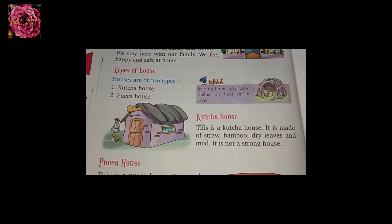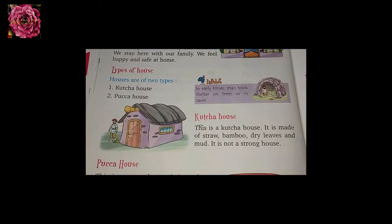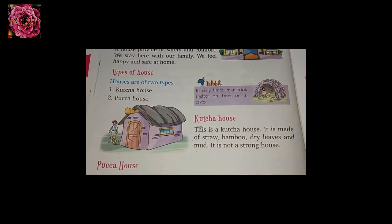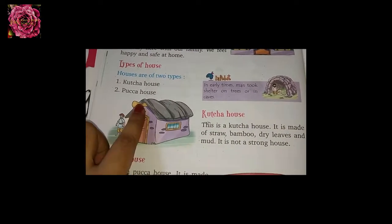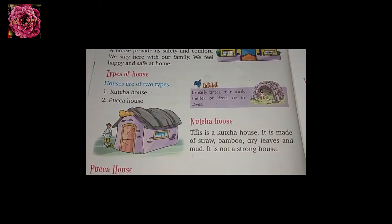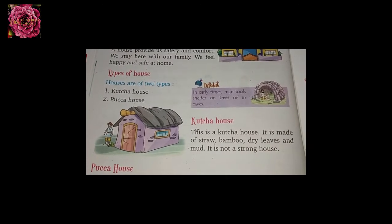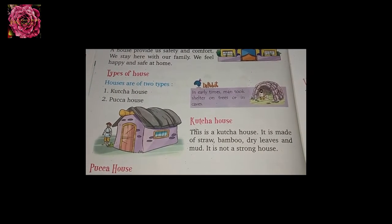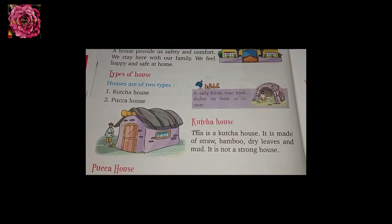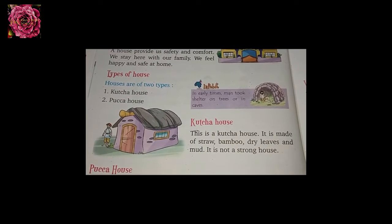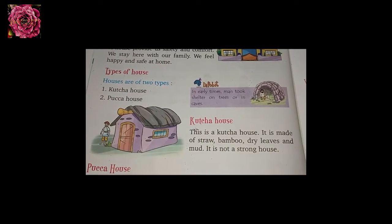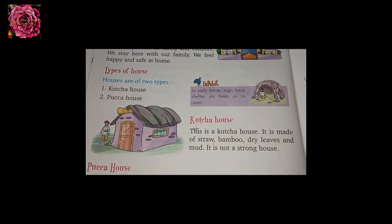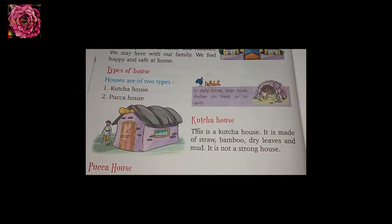Now let's look at a picture of a kutcha house. It is made of straw, bamboo, dry leaves, and mud. It is not a strong house. It is not a permanent house.